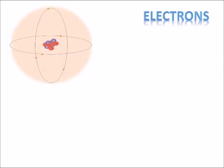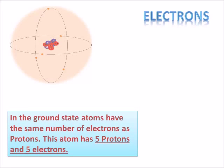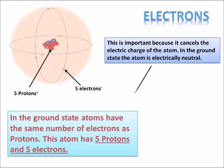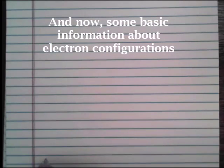Here's our atom again — nucleus with protons and neutrons, electrons orbiting, and the electron cloud. In the ground state — the lowest energy configuration — atoms will have the same number of electrons as protons. This atom has five protons and five electrons. This is important because it cancels out the electric charge of the atom. In the ground state, the atom is electrically neutral — it has no net electrical charge.